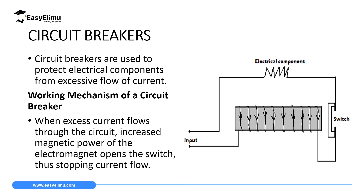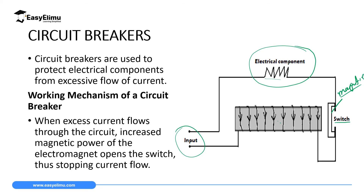Another application we are going to consider is a circuit breaker. Circuit breakers are used to protect electrical components from excessive flow of current. The main parts of a circuit breaker include the input — electricity from the main source — the component we want to protect, and a switch made of a magnetic material. This material has special properties such that it can only be attracted by a very strong magnet, which is formed when there is excess current that could damage the component.